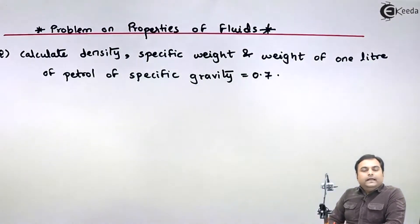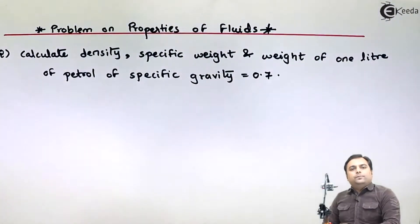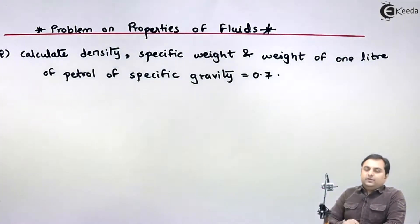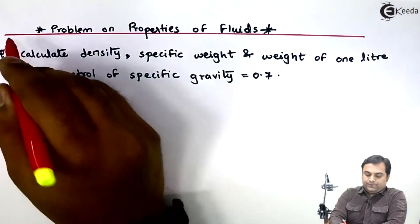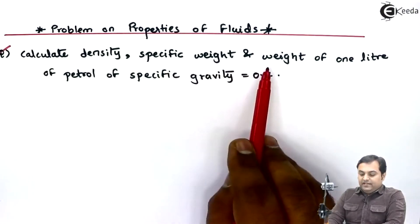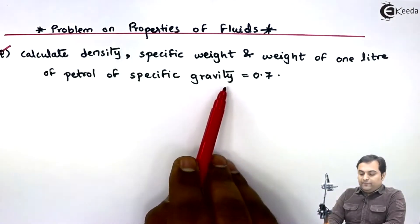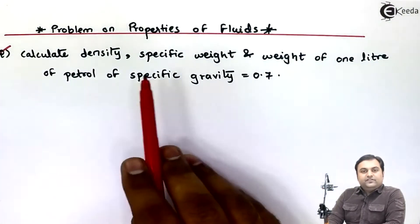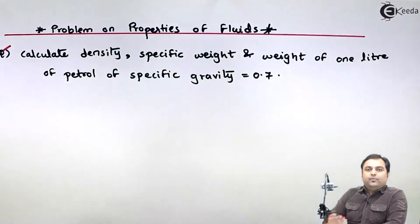Hello friends, let us see in this video a problem based on properties of fluid. The question in front of us: calculate density, specific weight, and weight of 1 liter of petrol of specific gravity 0.7. Whatever is given and whatever is asked, I will write in the form of data.